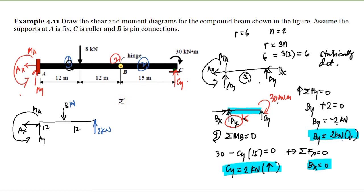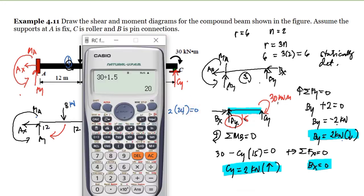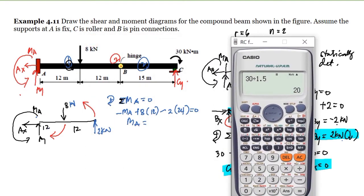Taking summation of moment at A equal to zero, with clockwise as positive, we have negative moment at A (assuming counterclockwise) plus 8 times 12 minus 2 times 24 equals zero. Computing: negative MA plus 96 minus 48 equals zero.